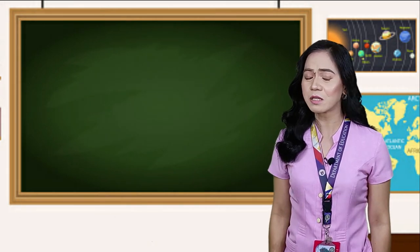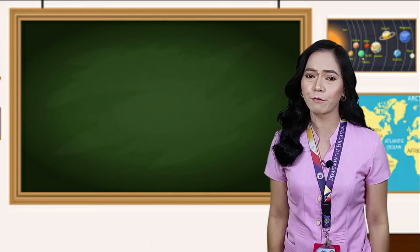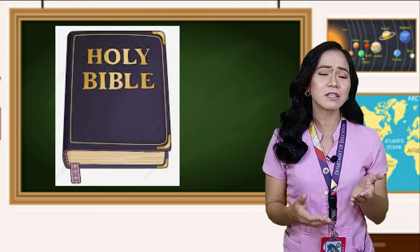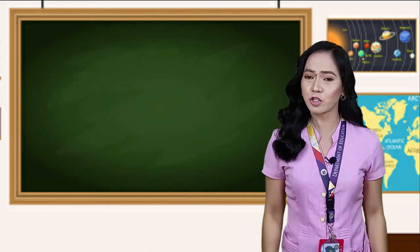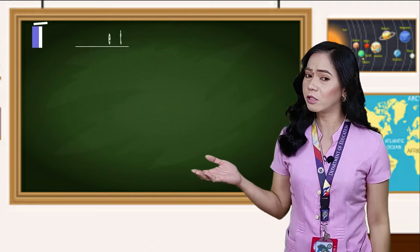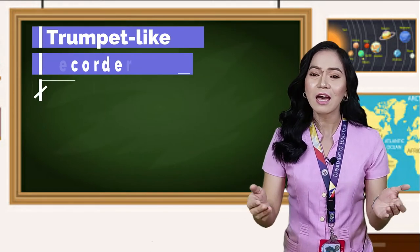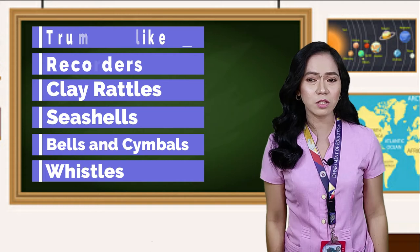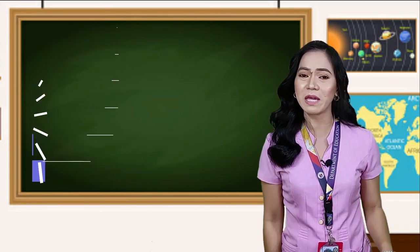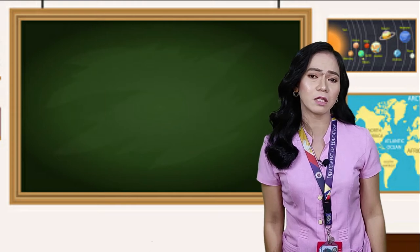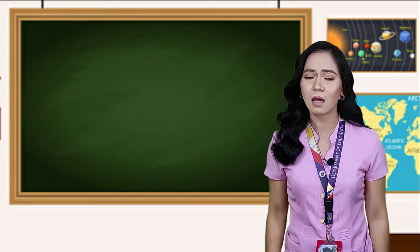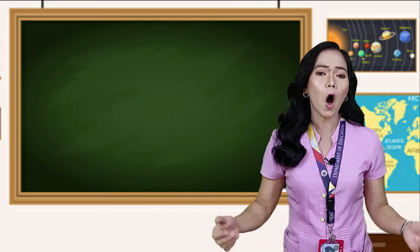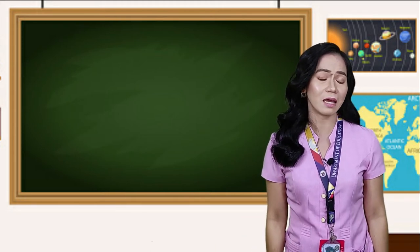In ancient times, musical instruments have been part of the heritage of the people of Israel. The Bible mentions dozens of musical instruments such as trumpet-like instruments, recorders, clay rattles, seashells, bells, and cymbals. These were being listed and have been found in statues and clay figurines of musicians, drummers, and professional mourners — all of which proves that music and song occupied an important place in ancient Israel.